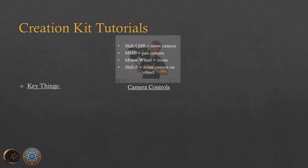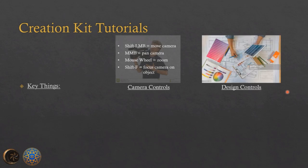Shift+F is something I see nobody uses and I don't think it's documented anywhere, but it focuses your camera on a selected object. It's super helpful — one of those things that isn't really highlighted but I use it all the time.